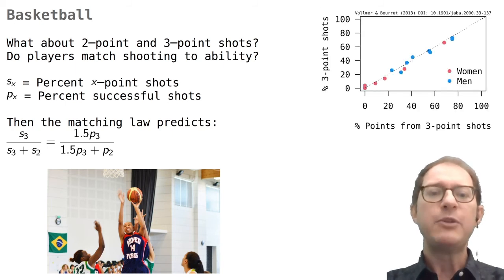Vollmer and Bourret looked at 13 male and 13 female players in a college team and followed them for a whole season. Some of the players were excluded from analysis because they made too few three point shots or got too little play time for a meaningful analysis. The data for the remaining 9 male and 6 female players conformed very well to the matching law, as we can see in the graph. The findings were later confirmed with professional basketball players, so even highly skilled professionals matched their behavior to reinforcement in the same way that was discovered for pigeons and rats.